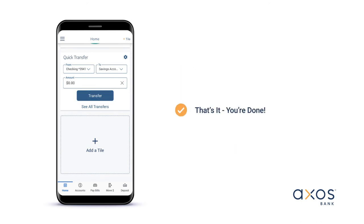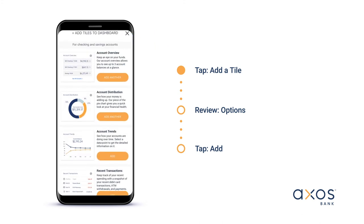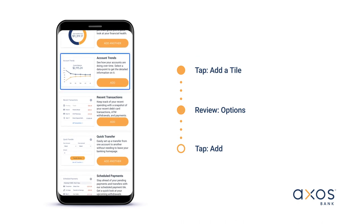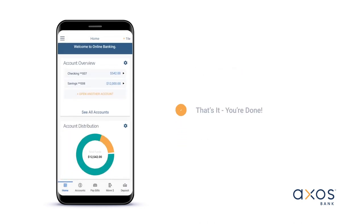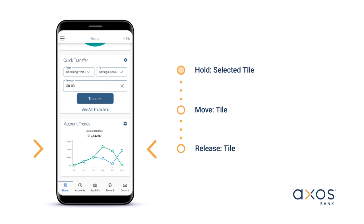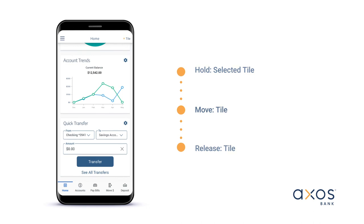Now let's add a new tile to your dashboard. Scroll to the bottom of your dashboard and tap Add Tile, or tap the plus tile button located in the top right corner of your screen. Here you can read a summary of each tile. Once you've selected a new tile, tap the Add button to add it to your dashboard. To organize your tiles, hold your finger on your screen for about a second until you can slide the tile to your desired location.